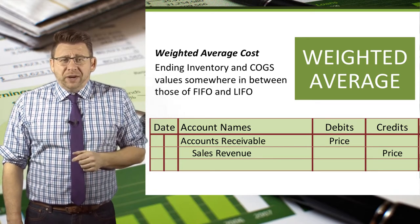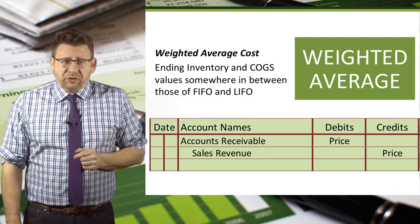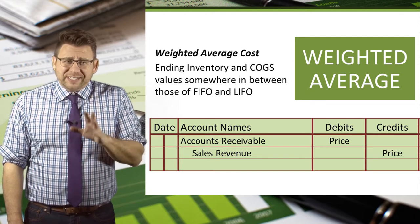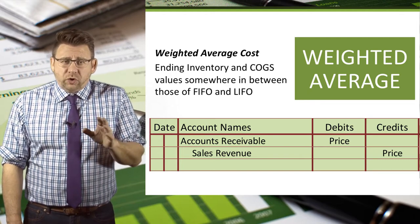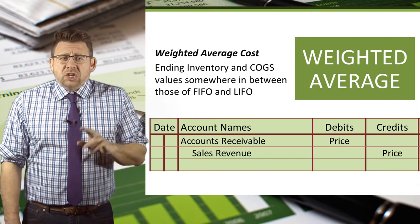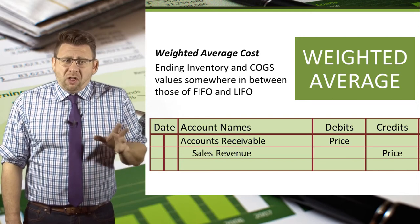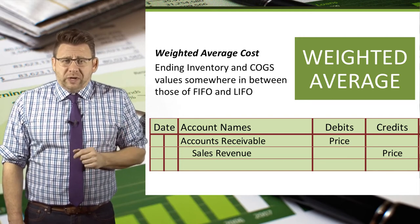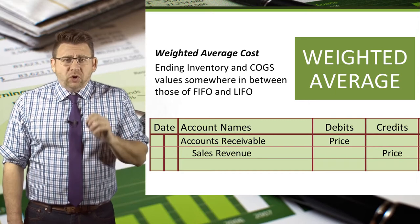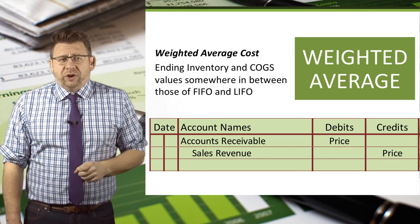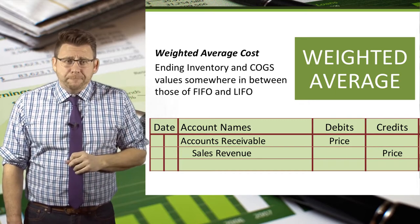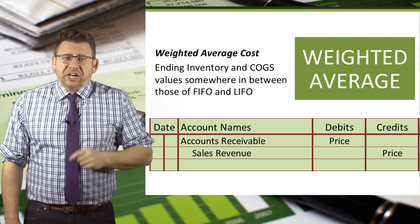Recall that under the periodic inventory tracking system, we don't track the purchases and sales of inventory through the inventory account. So the revenue entry is all that is recorded when a sale occurs. Therefore, cost of goods sold and ending inventory valuation are determined only at the end of the month. Let's look at an example.